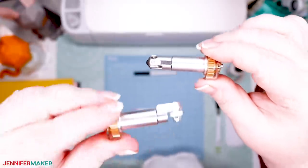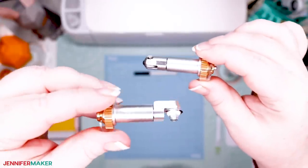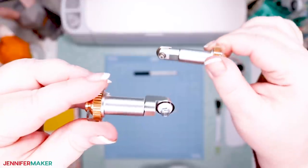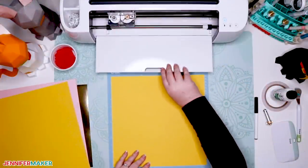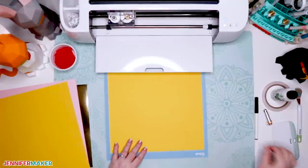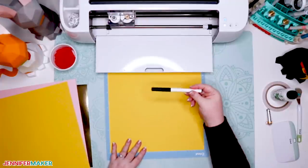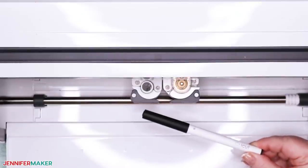If you're doing the draw layers as I am, you'll also need to insert a fine point pen. If you're using the scoring wheel, you can put your pen in now into clamp A on your cutting machine. If you're using a scoring stylus, you'll be prompted to put it in after the scoring is done.